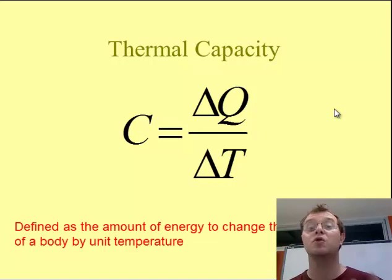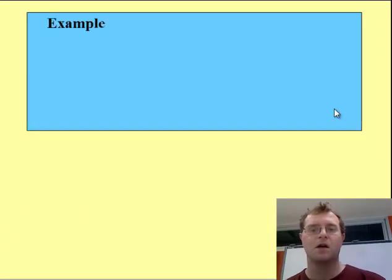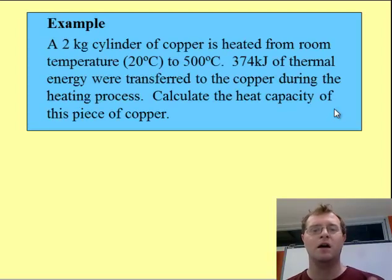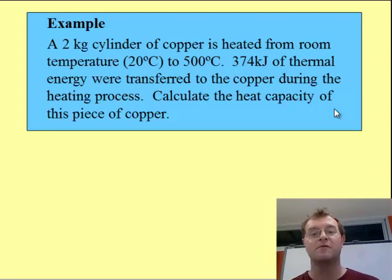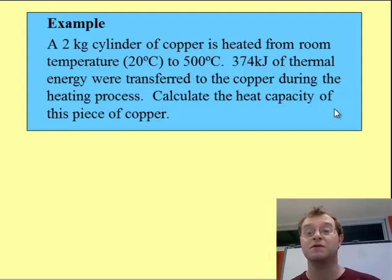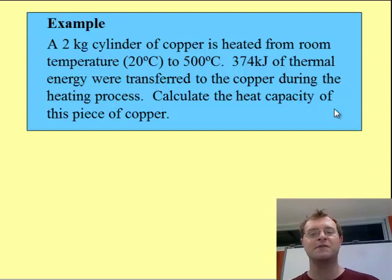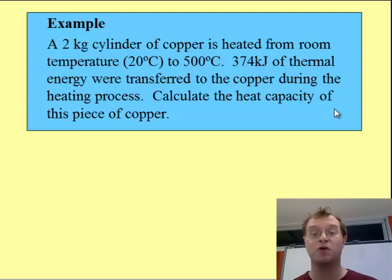Let's consider using this in a question — it really comes to life here. I'm given a 2 kilogram cylinder of copper, and it's heated from room temperature, which is 20 degrees, to 500 degrees centigrade. So the change in temperature is 480 degrees. Now, 374 kilojoules of thermal energy was transferred during this process, and we want to work out the heat capacity of this piece of copper.